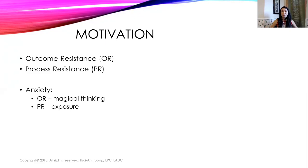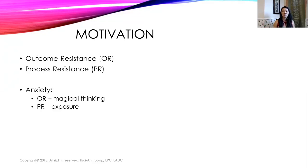With trauma and anxiety specifically, when we see symptoms of anxiety from trauma, we're going to encounter two types of resistance. Outcome resistance is the reason why they may not want the change. They come in telling you they have all these symptoms and want to get rid of them, but often there's outcome resistance — because if they suddenly let go of their anxiety and no longer have trauma symptoms, maybe they no longer feel safe.